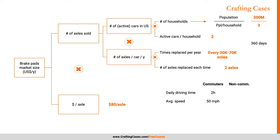I'd say there are heavy users and light users — let's call them commuters and non-commuters. Commuters drive from suburbs to cities to work. My guess is they spend about two hours per day in the car at 50 miles per hour because they're usually on the highway. Non-commuters spend about 30 minutes per day at 30 miles per hour since they're usually in their city. And I'd need a split between commuters and non-commuters — let's say 50% each. Does that sound reasonable? Yeah, sounds reasonable.